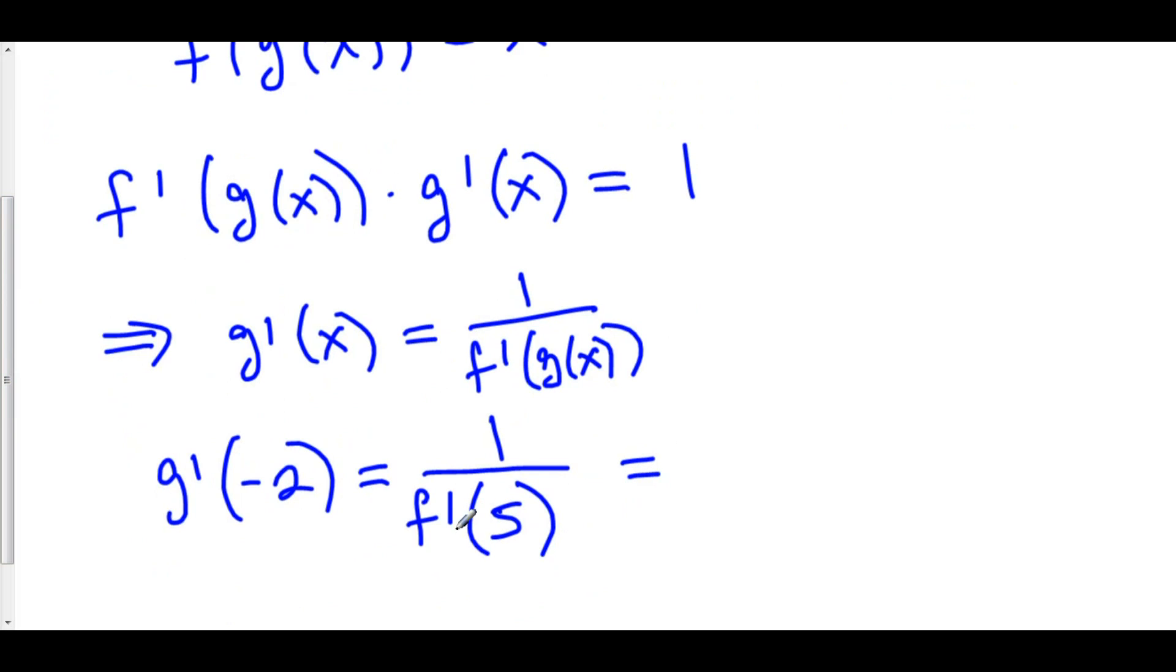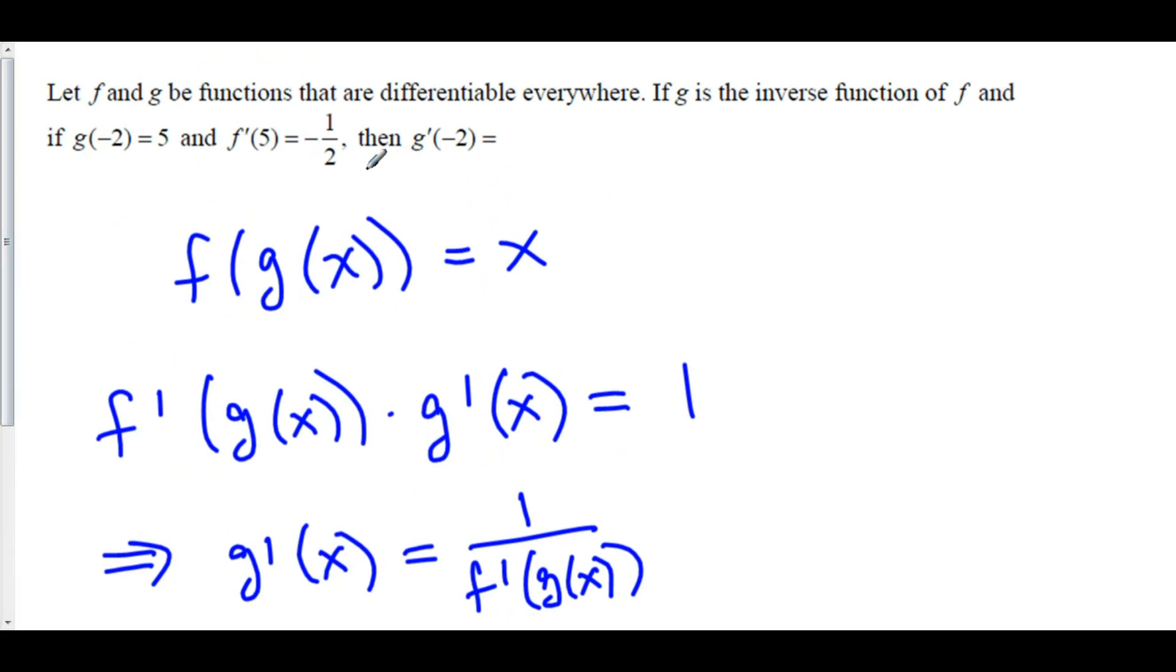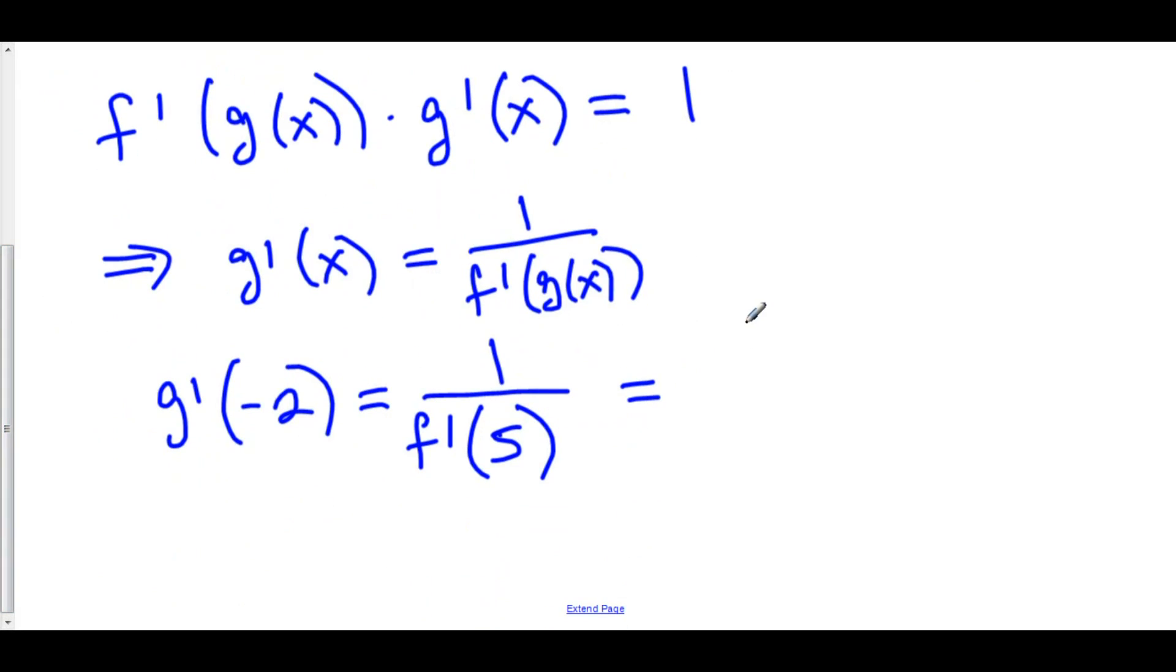And of course, f prime of 5, they gave us as negative 1 half. And so this is 1 over negative 1 half. And 1 over negative 1 half is negative 2. So g prime of negative 2 is equal to negative 2.